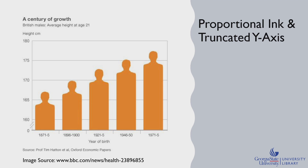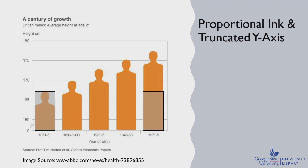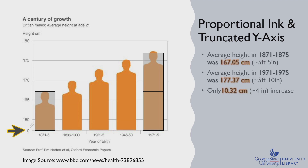The proportional ink concept can also be applied to graphs and charts. This bar chart is supposed to show how the height of British men has changed over a century. They use these fun little orange guys instead of standard bars. But because of the principle of proportional ink, it looks like men have doubled in height in just 100 years. When you look at the y-axis, you see that it's been truncated, meaning it does not start at zero, which leads to the issue of disproportional ink, making it look like the changes in height over time have been much more dramatic than the roughly 10 centimeters of growth that has actually occurred.